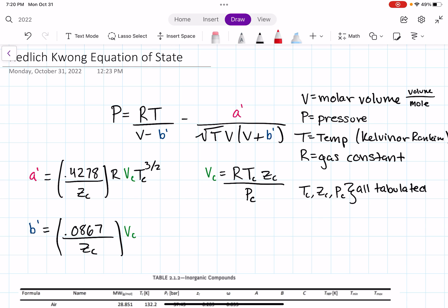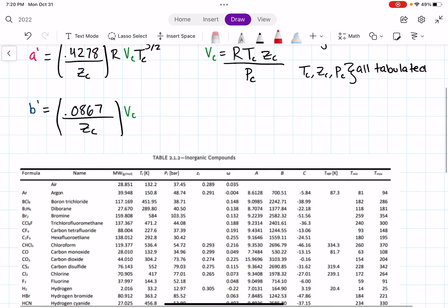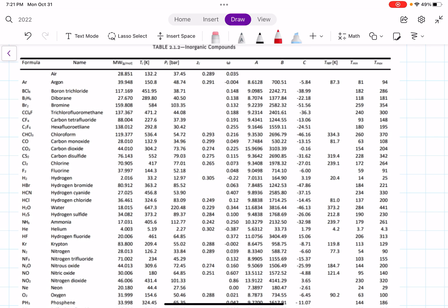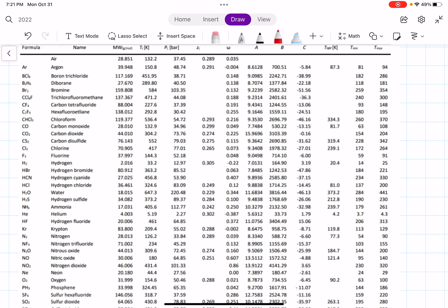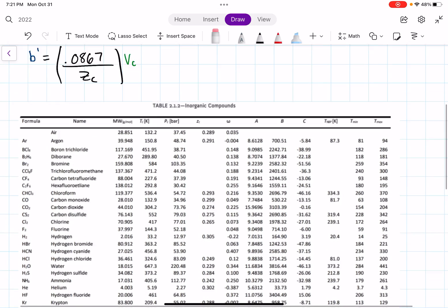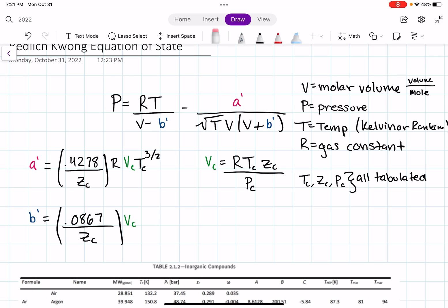All of those are unique and tabulated numbers that are unique to the substance that you're using at the time. So for example, in my textbook, I can find TC, PC, or ZC in table 2.1.2. And depending on which substance I have, I can just look it up. If I want chlorine, it tells me here that my critical temperature is 417, and my critical pressure is 77.01, and then my critical Z value is 0.265. So it really depends on the substance you're using in that problem. But usually, even if you don't have your tables, you can look these values up on the internet.